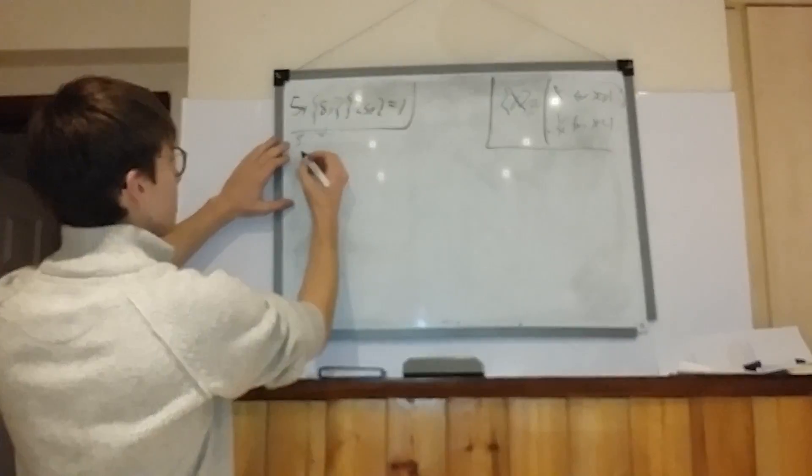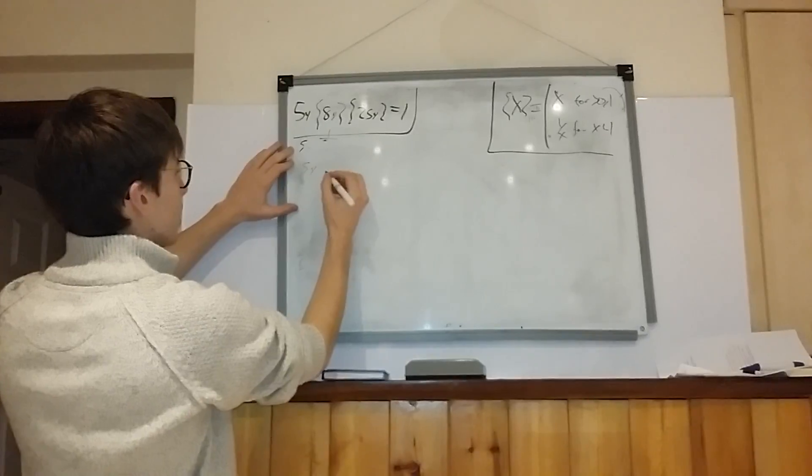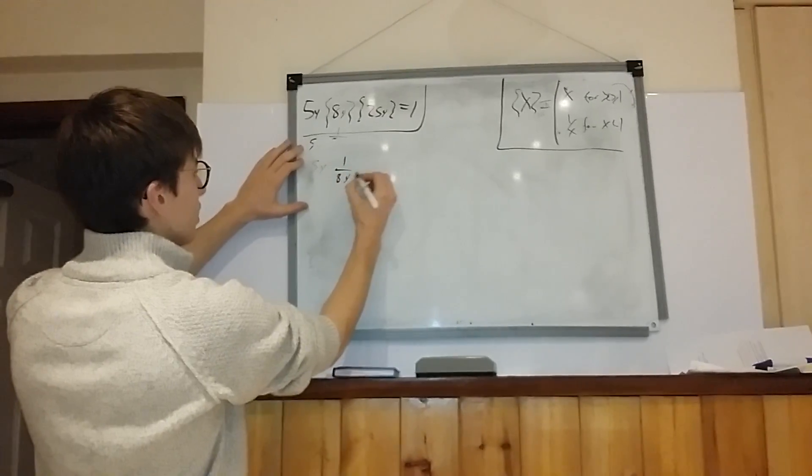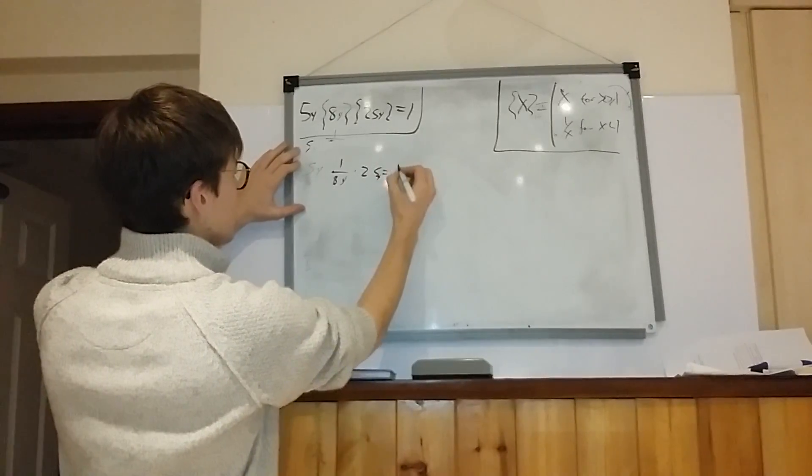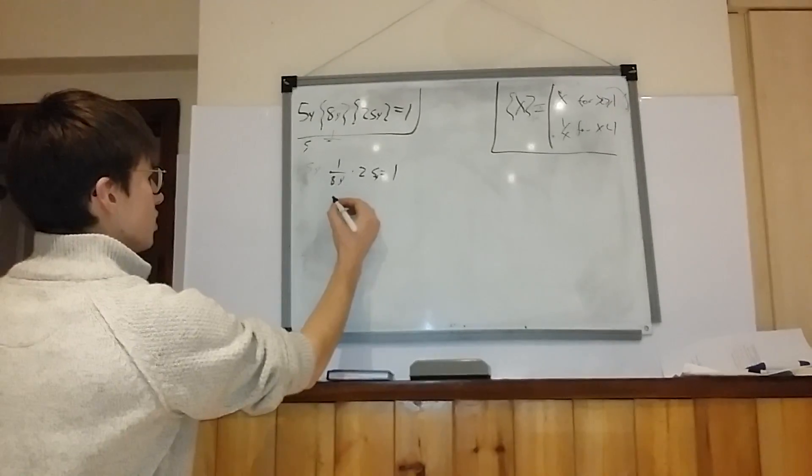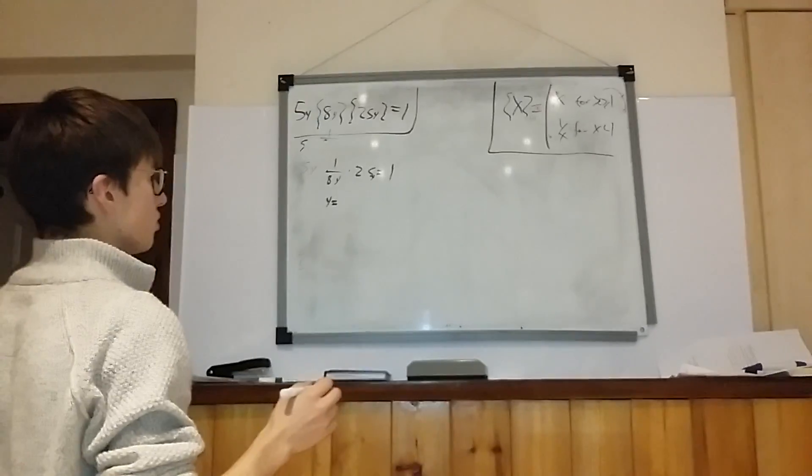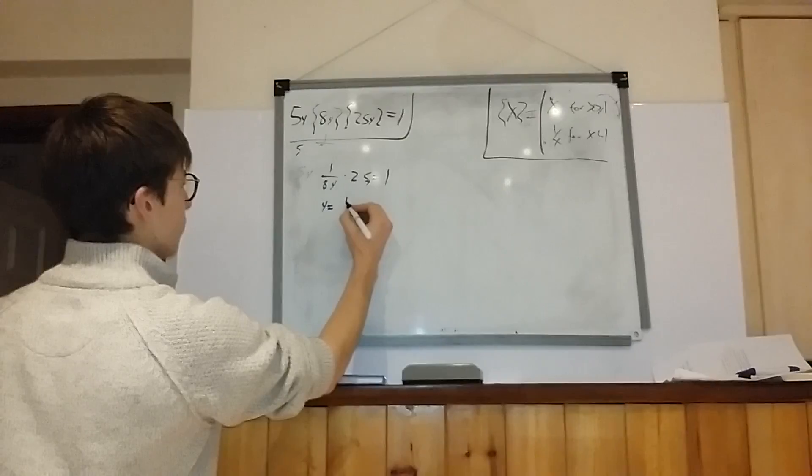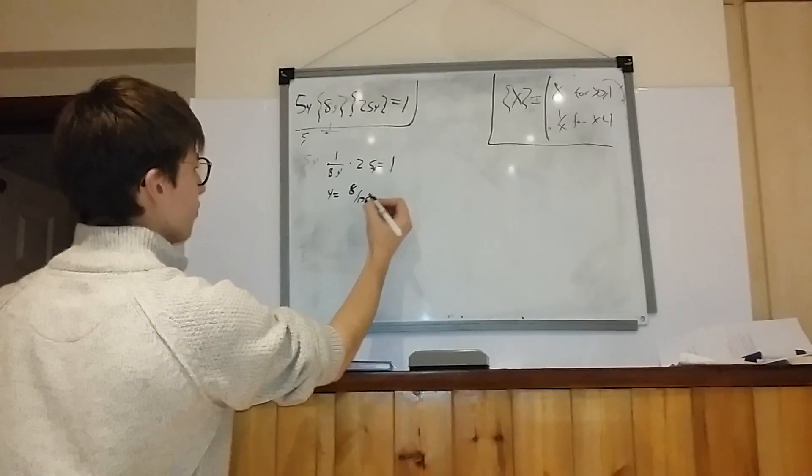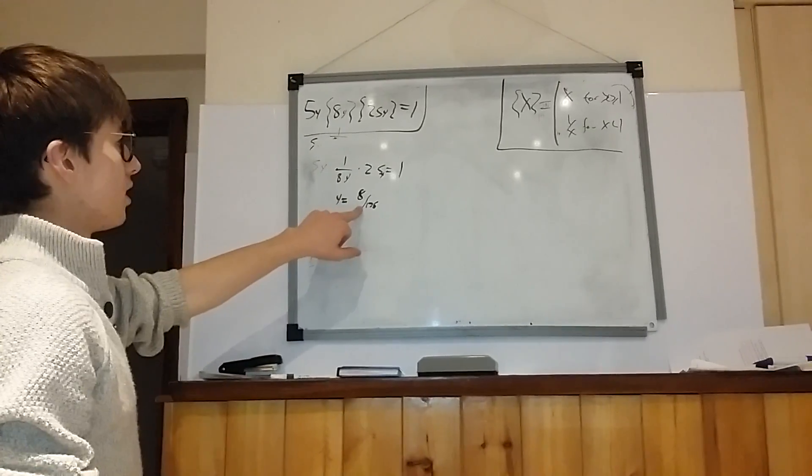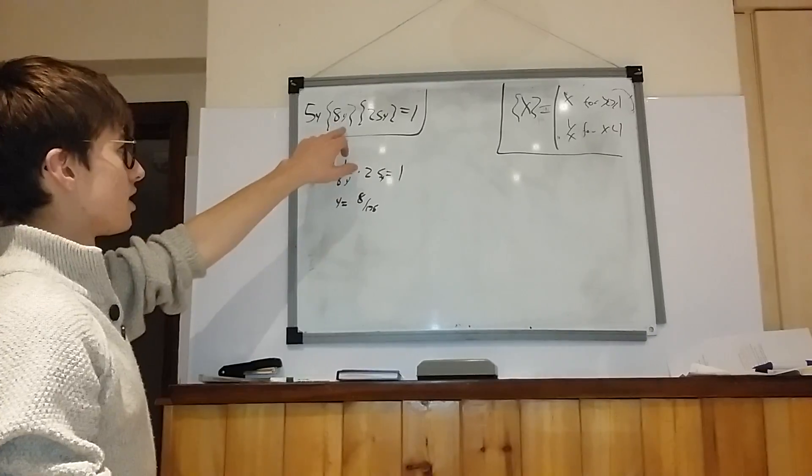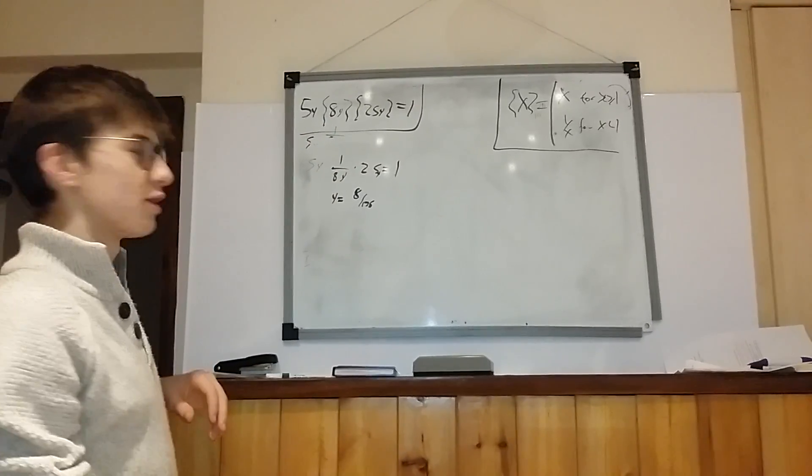The second one is you say, okay, 5y times by 1 over 8y plus 25y is equal to 1. So for that, you get y is equal to 8 over 125. When you plug that in to this, does this one work as well? No. No, this one doesn't work either.